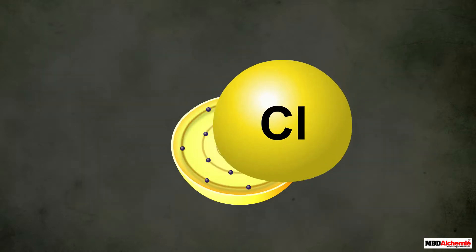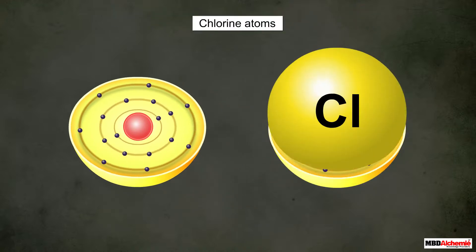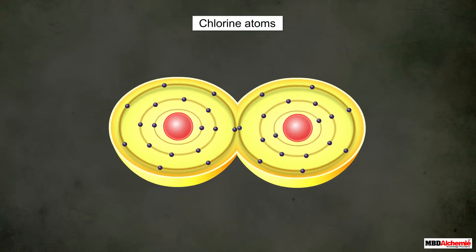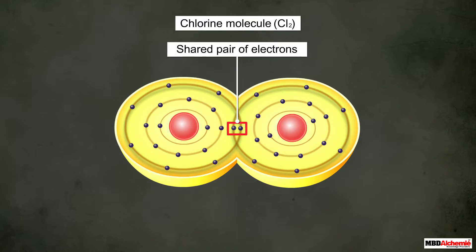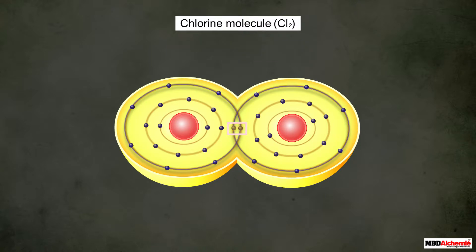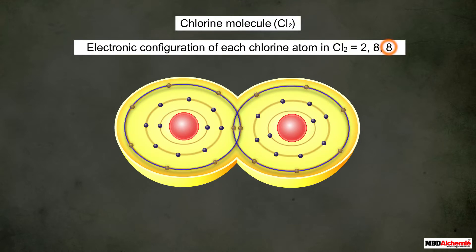Let us understand covalent bonds with an example. A chlorine atom has seven electrons in its valence shell, so it needs one more electron to complete its octet. Two chlorine atoms come together and share one of their electrons with each other. There is then one shared pair of electrons belonging to the valence shell of both chlorine atoms, forming a molecule of chlorine in which each atom has a complete octet.